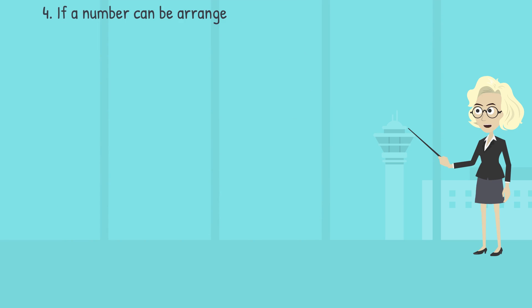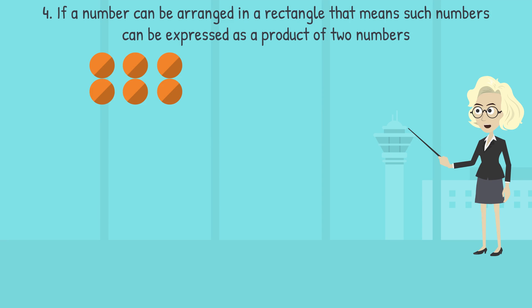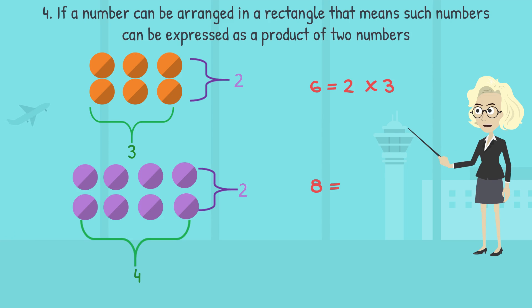If a number can be arranged in a rectangle, that means such numbers can be expressed as a multiple of 2 numbers. For example, 6 can be written as 2 multiply by 3, and 8 can be written as 2 multiply by 4.